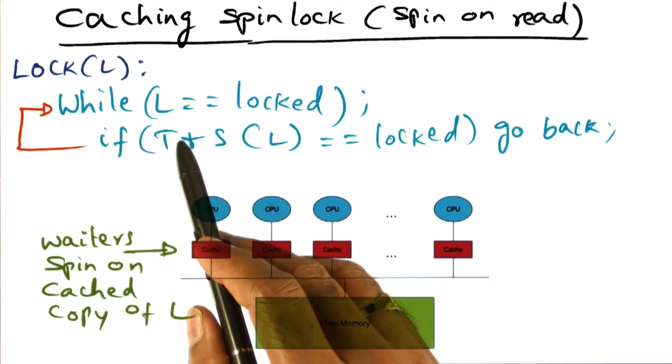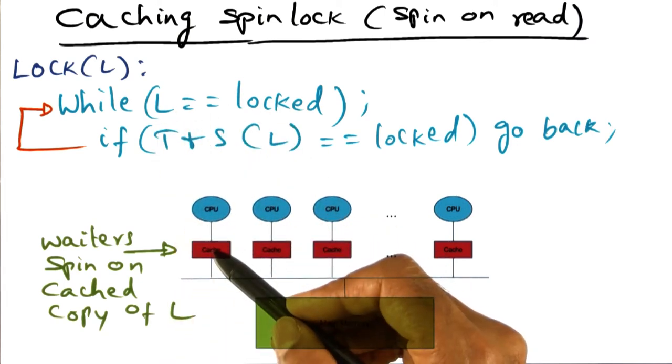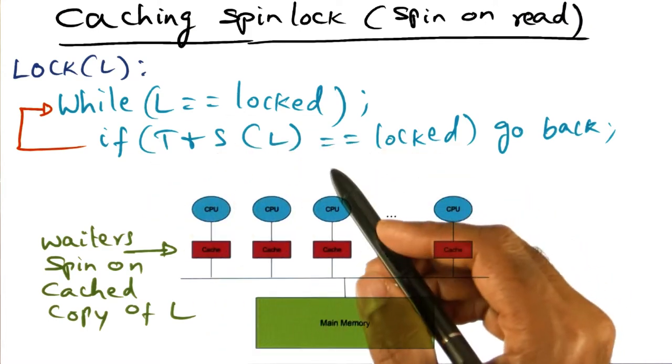I simply go back and do the looping on my private copy of L and wait for the guy who beat me to the punch to release the lock eventually so that I can get it. So that's the idea.